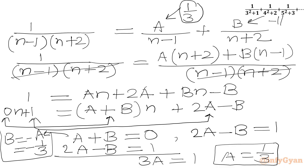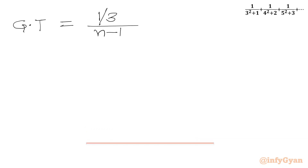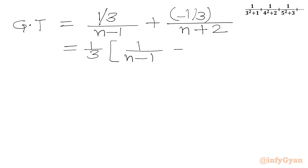So our general term becomes: (1/3)/(n-1) + (-1/3)/(n+2). Taking 1/3 common, we can write the general term as (1/3)[1/(n-1) - 1/(n+2)].